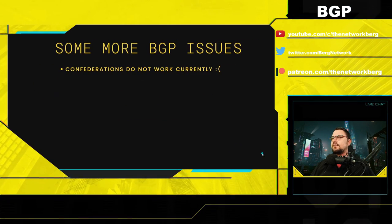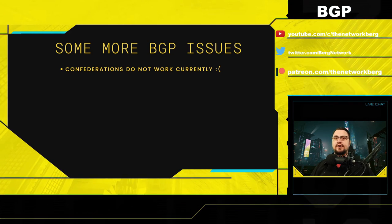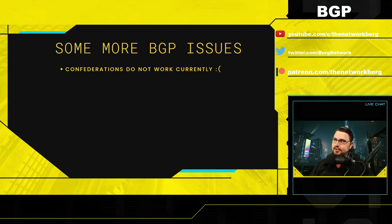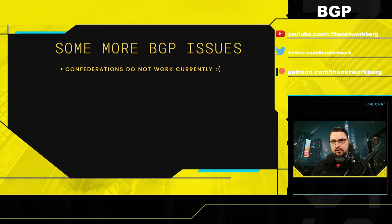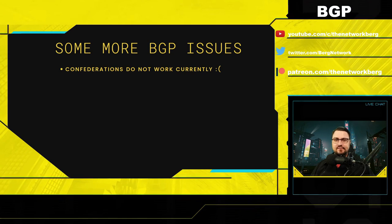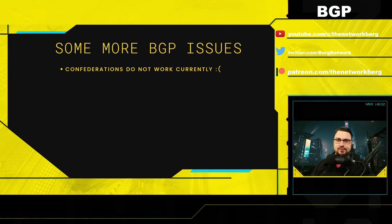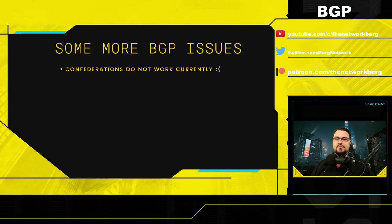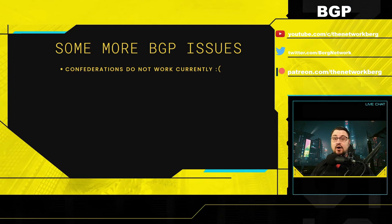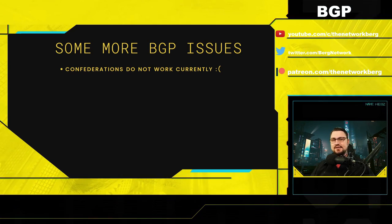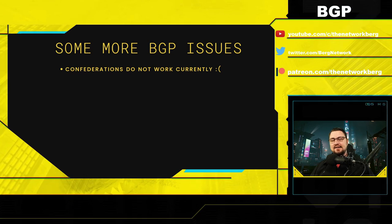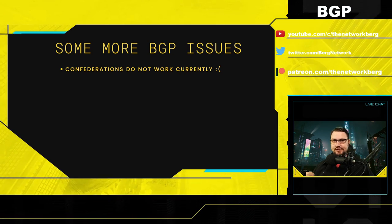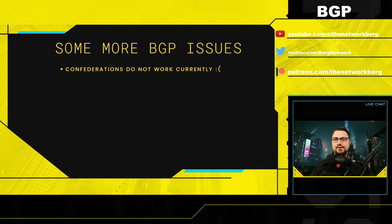Another issue with RouterOS version 7 BGP: confederations do not work. BGP confederations are a feature that simply isn't available in version 7 yet — similar to BFD. If you're actively using confederations, you'll need to stick with RouterOS version 6 until this is fixed in version 7.